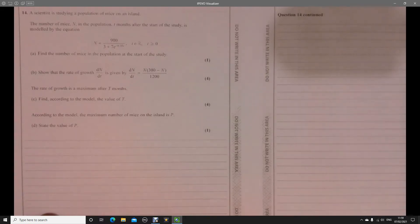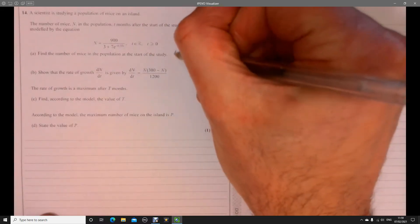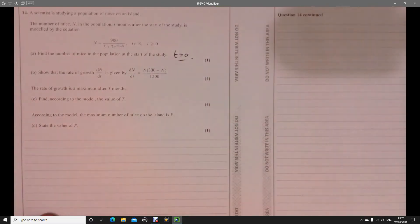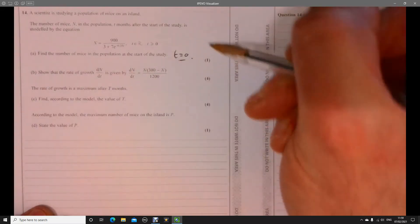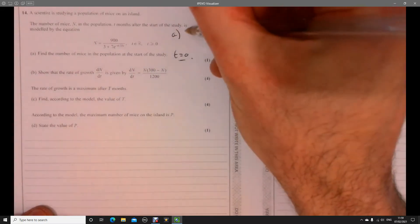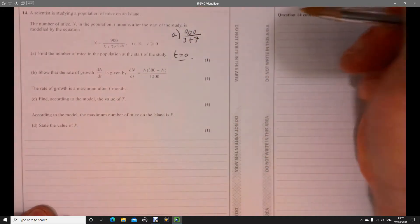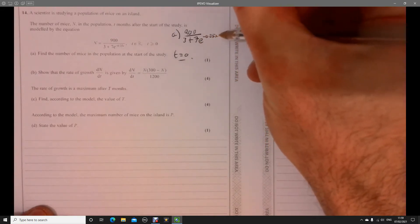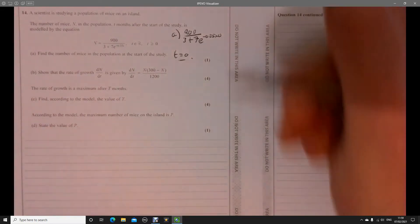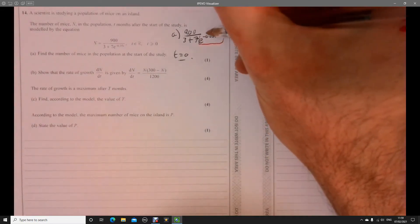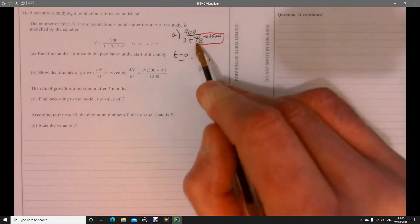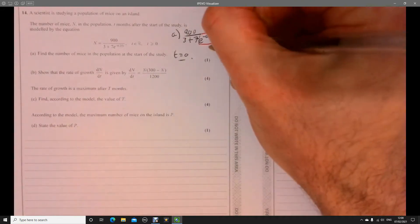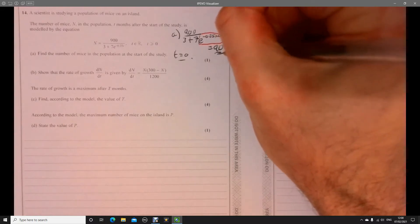Question 14. So for part a, it just means when is t equal to 0? So we just sub it in. Part a is just going to be 900 over 3 plus 7 times e to the minus 0.25 times 0. So that's e to the power of 0, which is 1. So 900 over 10, that's just equal to 90. Nice first mark.